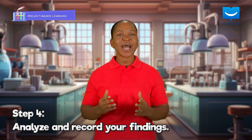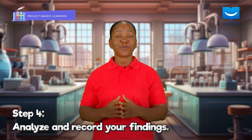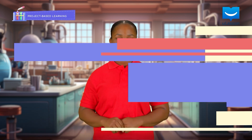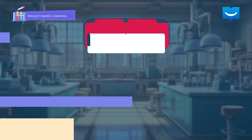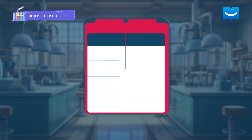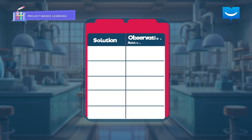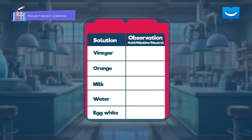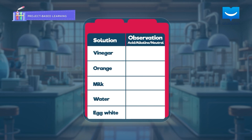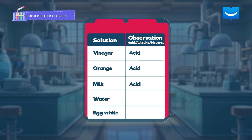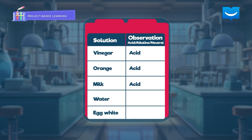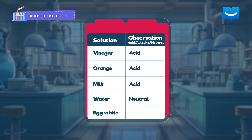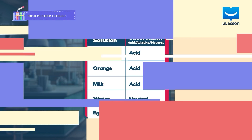Now that you have carried out the experiment, step 4 is to analyse and record your findings. From my experiment, we can deduce that vinegar, orange juice, and milk are acids, water is neutral, and egg whites are alkaline.